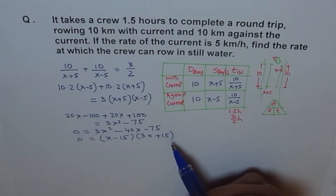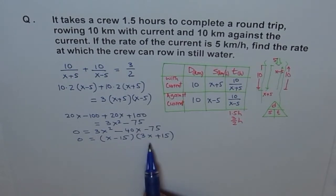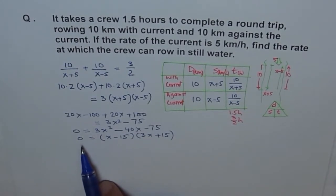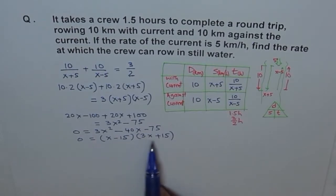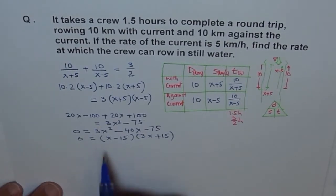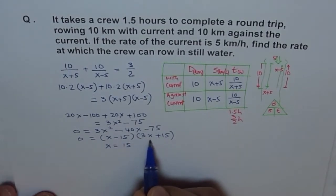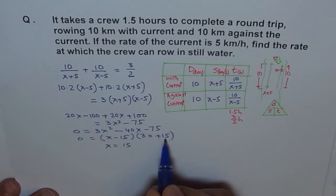For factoring, you can look into my video on factoring. Factoring trinomials. And that will explain you how to do this, correct? Now, here, we get 0 equals to these two factors. Now, it could be 0 only if one of them factors is 0, right? When will this be 0? This will be 0 at X equals to 15.